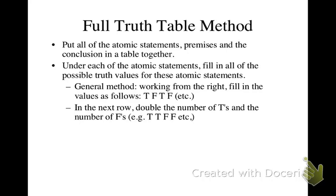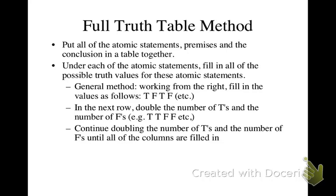In the next column — just to the left of the rightmost column — we're going to double the number of Ts and the number of Fs: T, T, F, F, etc. We're going to continue doubling until all columns are filled in. So if there's a third column, it'll be T, T, T, T, F, F, F, F. If there's a fourth column, then you'll have eight Ts and then eight Fs — however many columns you need for your truth table.